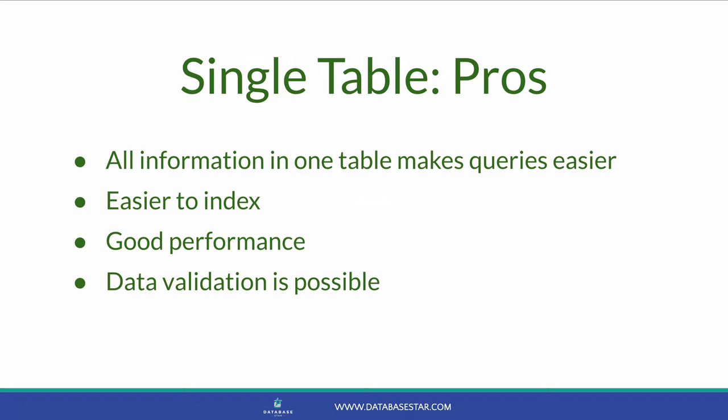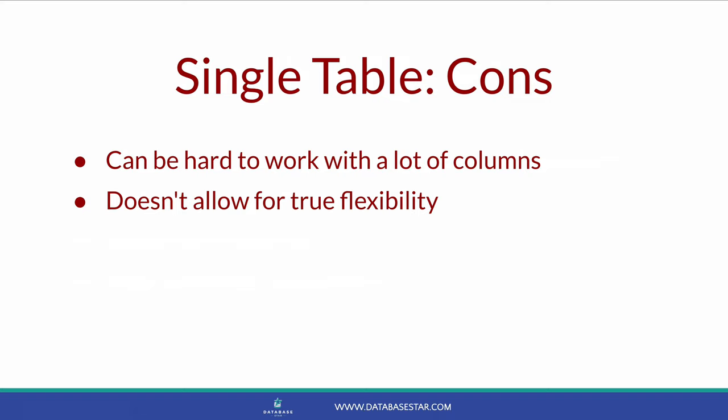Queries on this design can perform pretty well compared to other solutions, such as Entity Attribute Value, though this depends on data volume and your overall query. You won't need to write the same kind of subqueries required for EAV. You can also add data validation to each column — each has its own specific data type, and you can add constraints such as check constraints if needed. One disadvantage is that there could be a lot of columns to work with — your table may end up having hundreds of columns, each representing a possible piece of information. This can be hard to convince the team about, and hard to work with depending on the IDE you use.